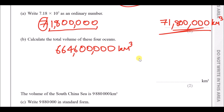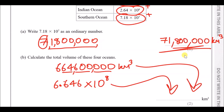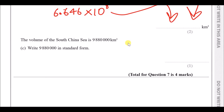Since this question doesn't specify ordinary number or standard form, you have two options. For standard form, take the first digit, put a decimal point, copy out the other digits (6, 4, 6 — don't copy the zeros), then write ×10 and count the digits after the first number, giving eight digits, so ×10⁸. You can write whichever form the calculator gives to avoid calculation mistakes.